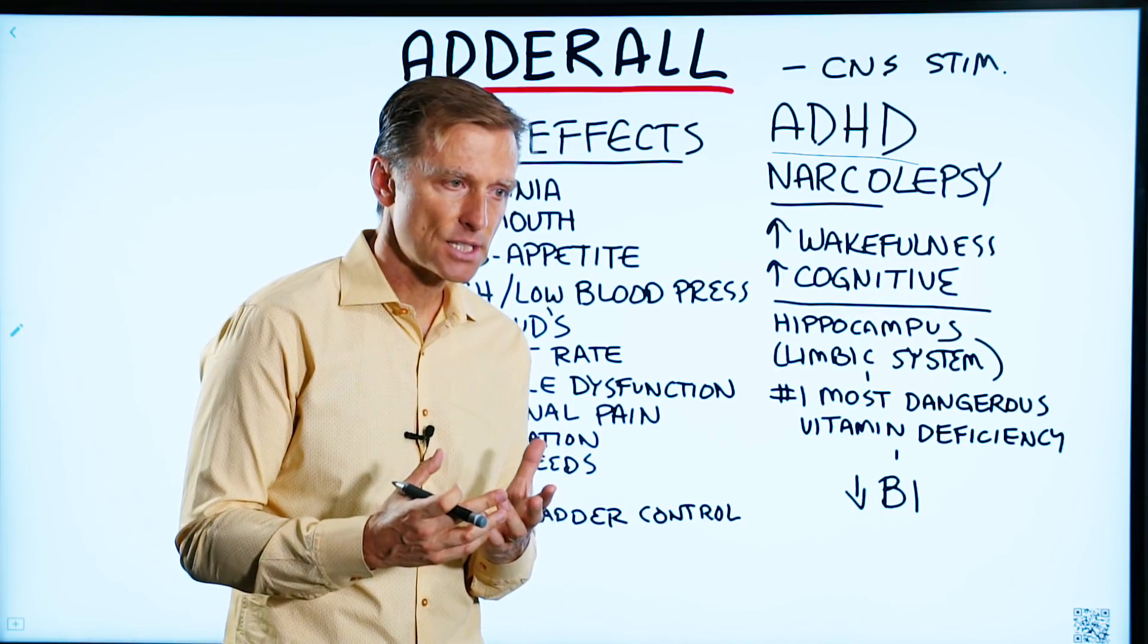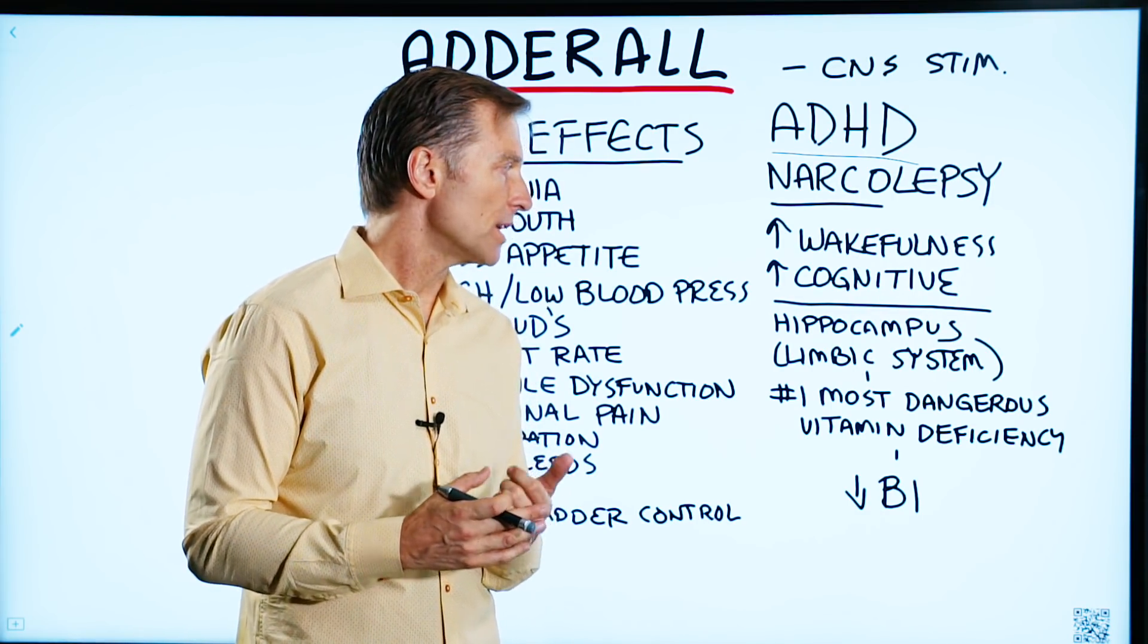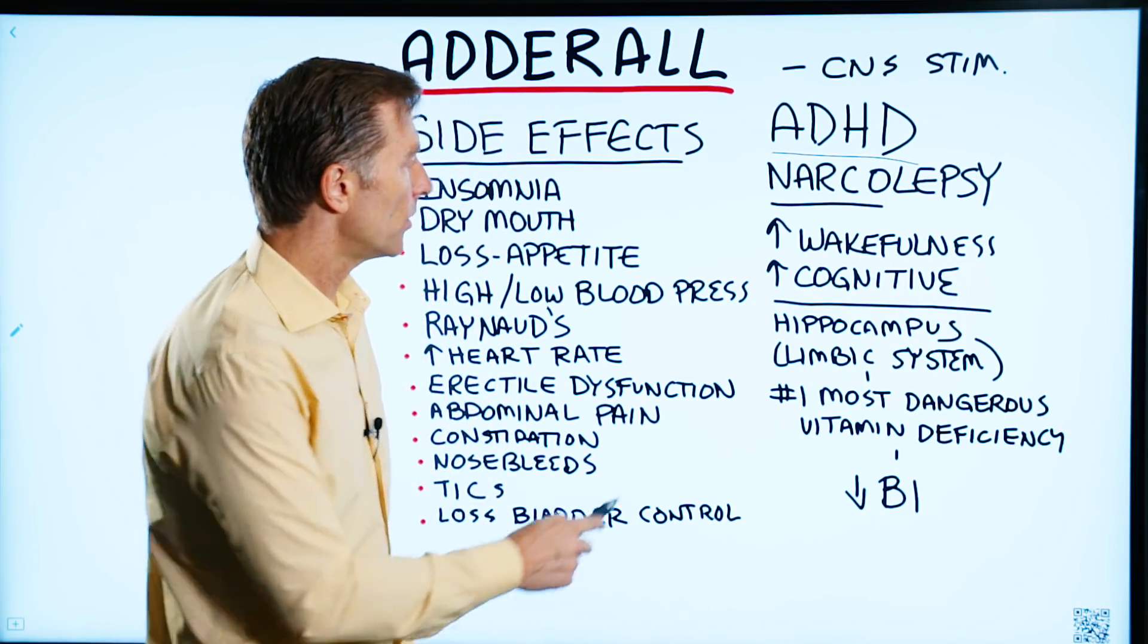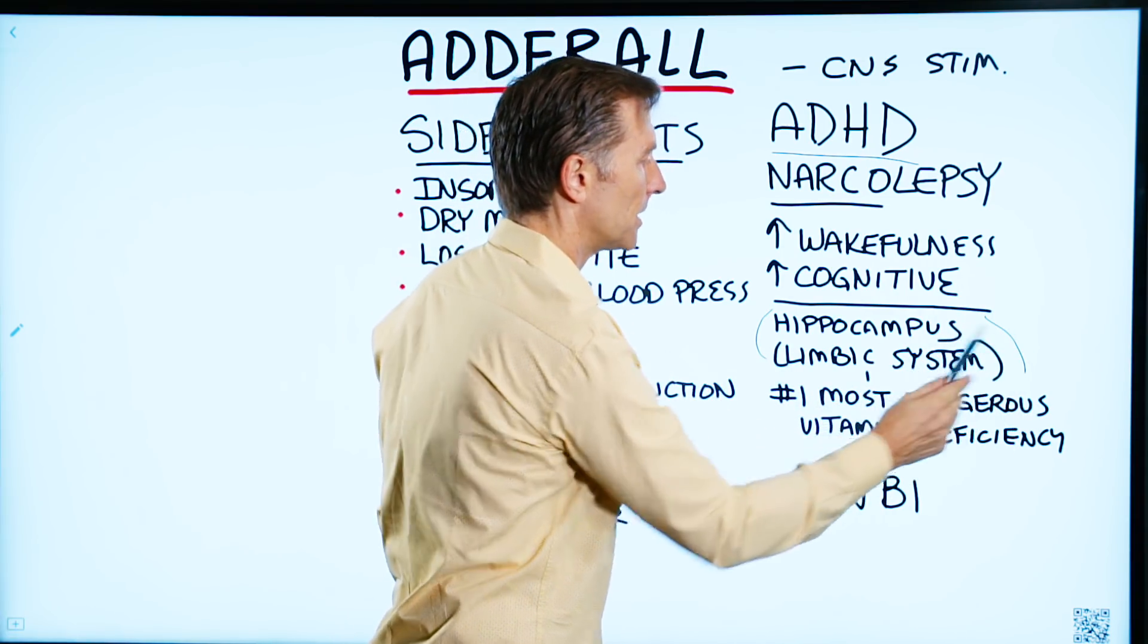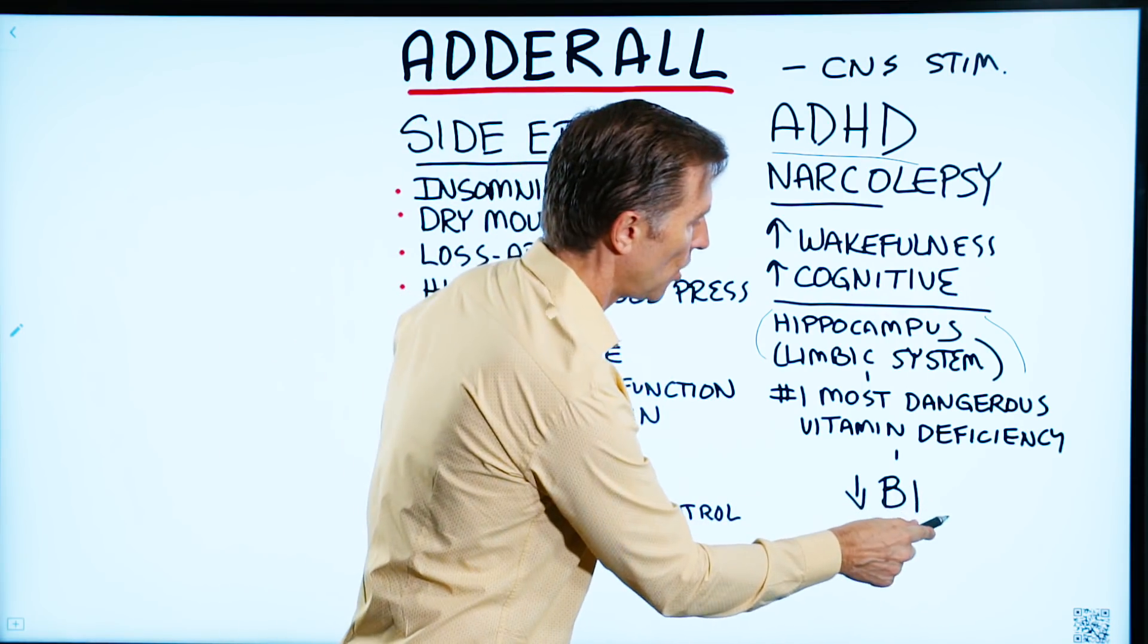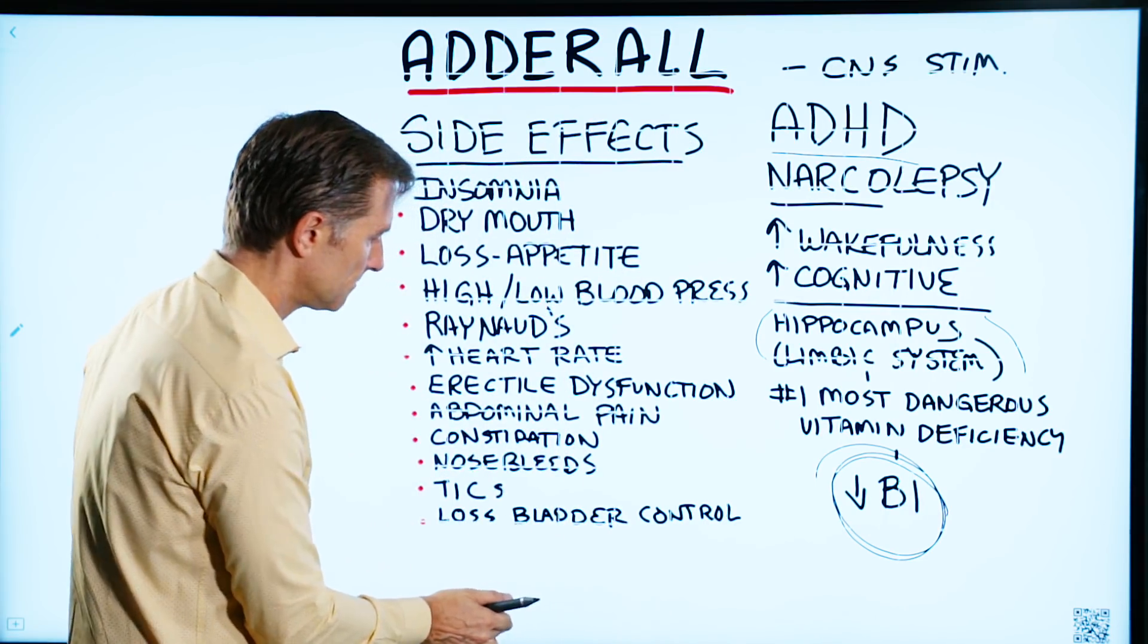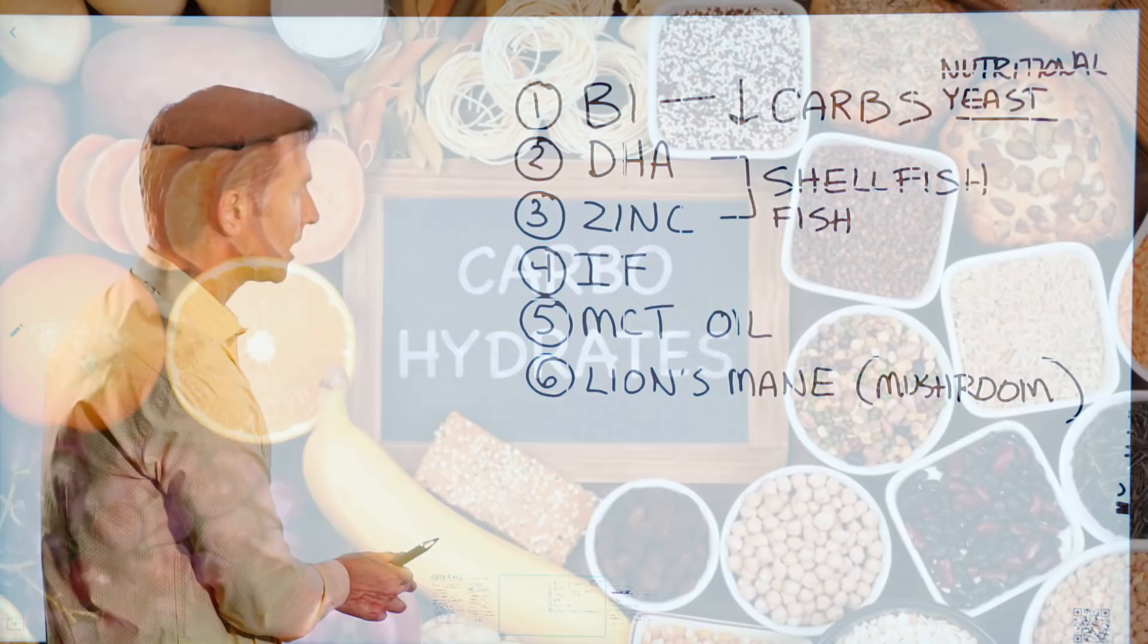Your brain is highly sensitive to nutrition and the fuel that you put in it. You can create some really amazing effects by changing your diet, especially when we get into the area of the brain called the hippocampus, which is part of the limbic system. The number one most dangerous vitamin deficiency for the brain is low vitamin B1, and this comes from high carbohydrate diets.